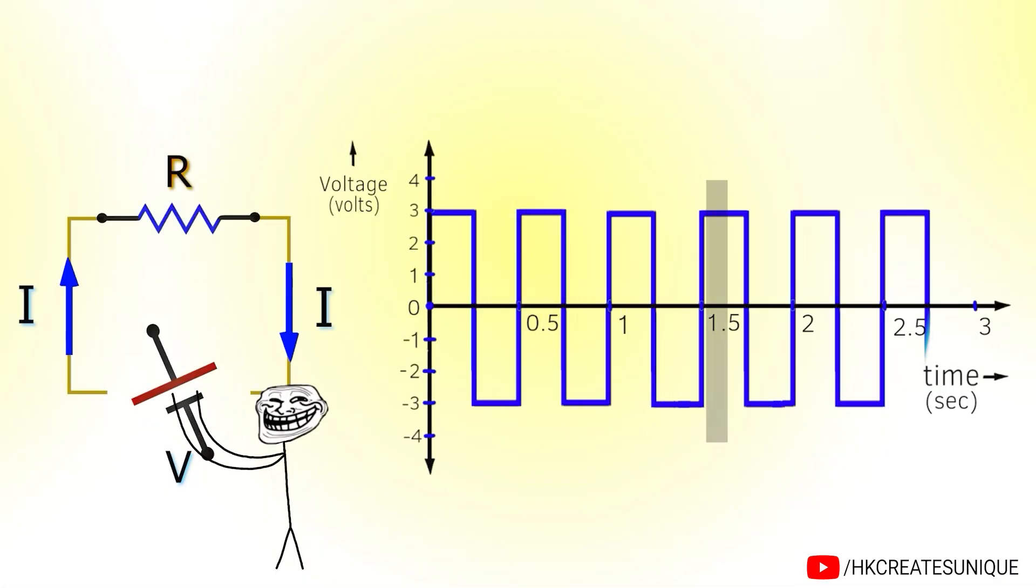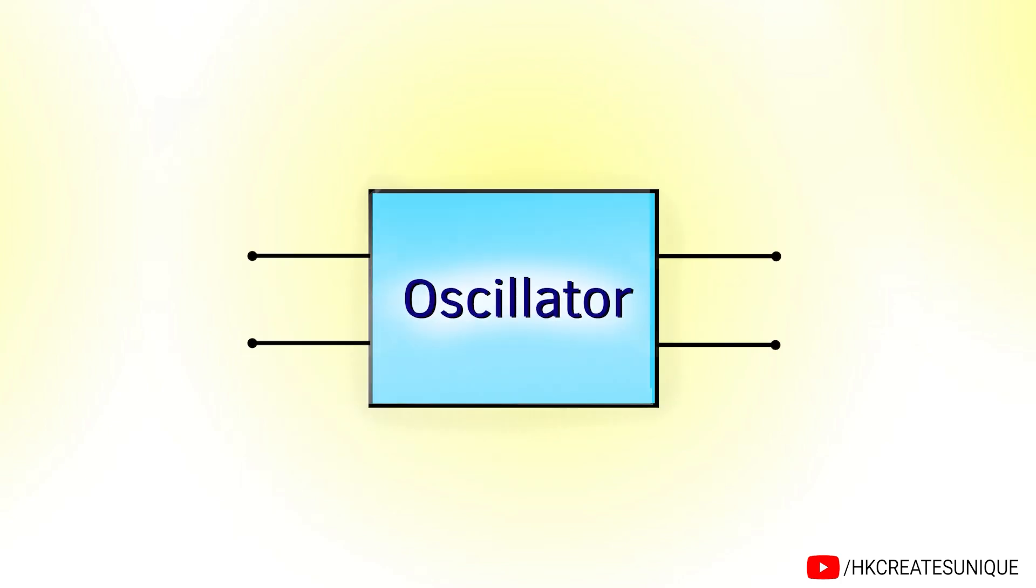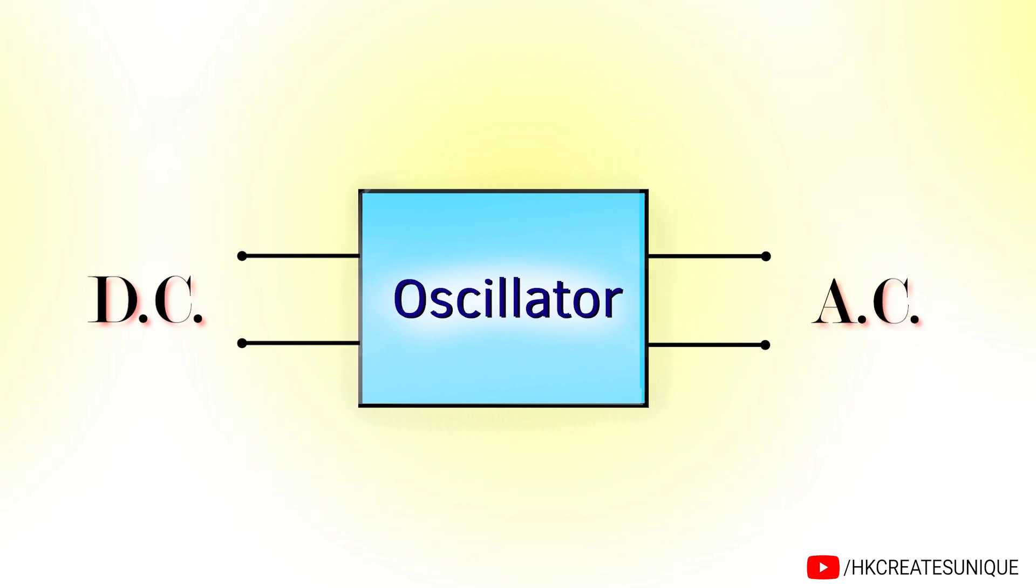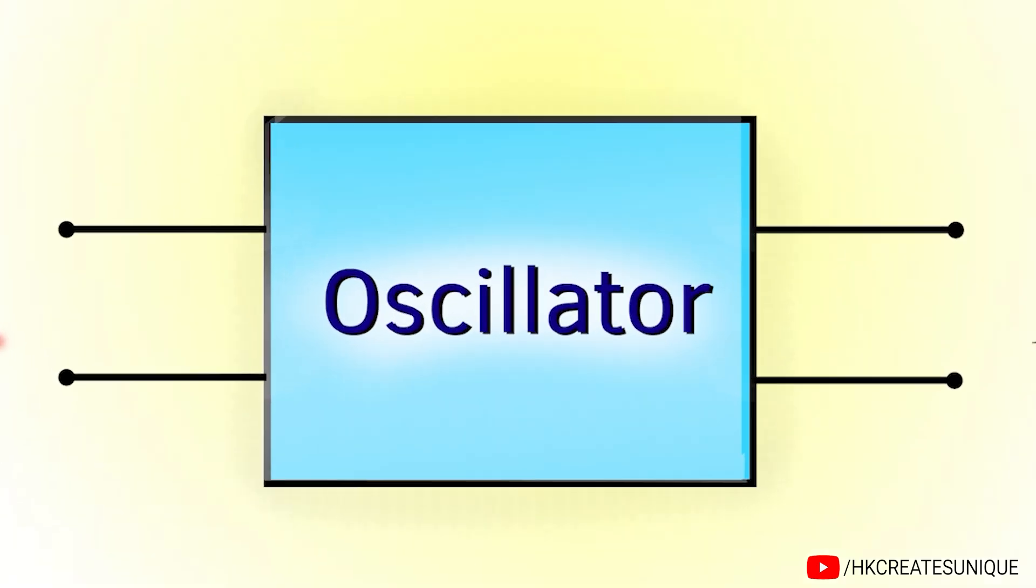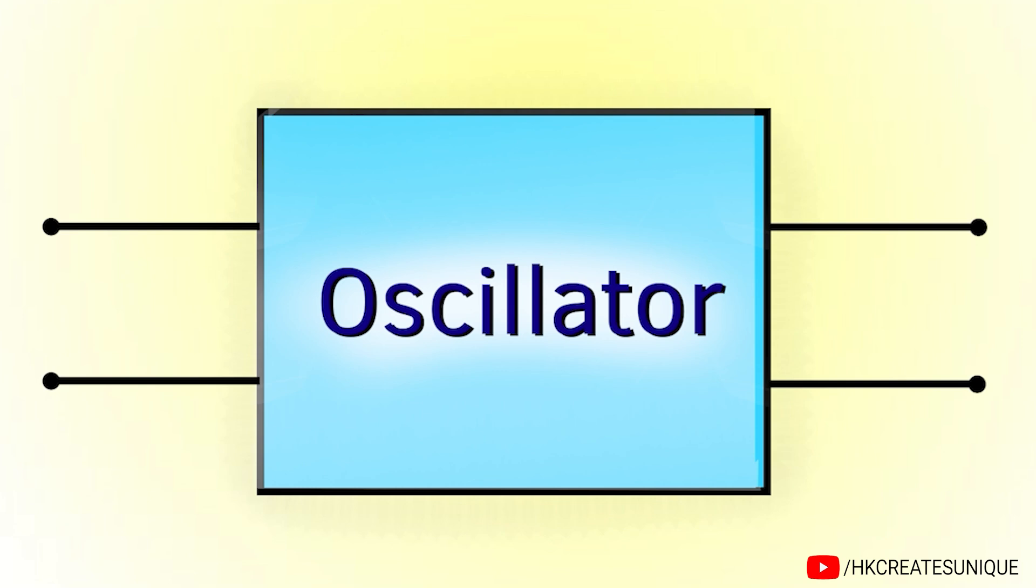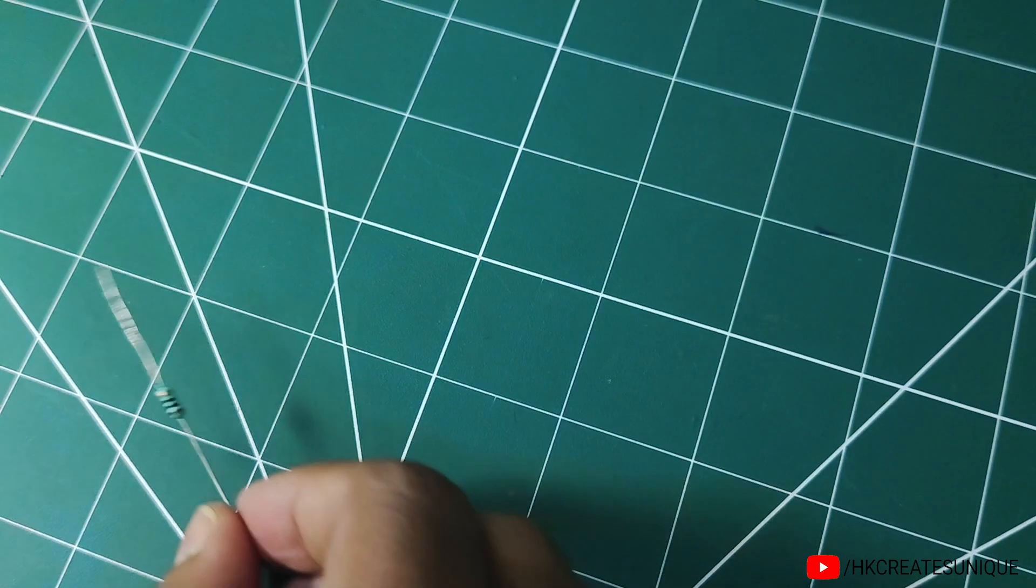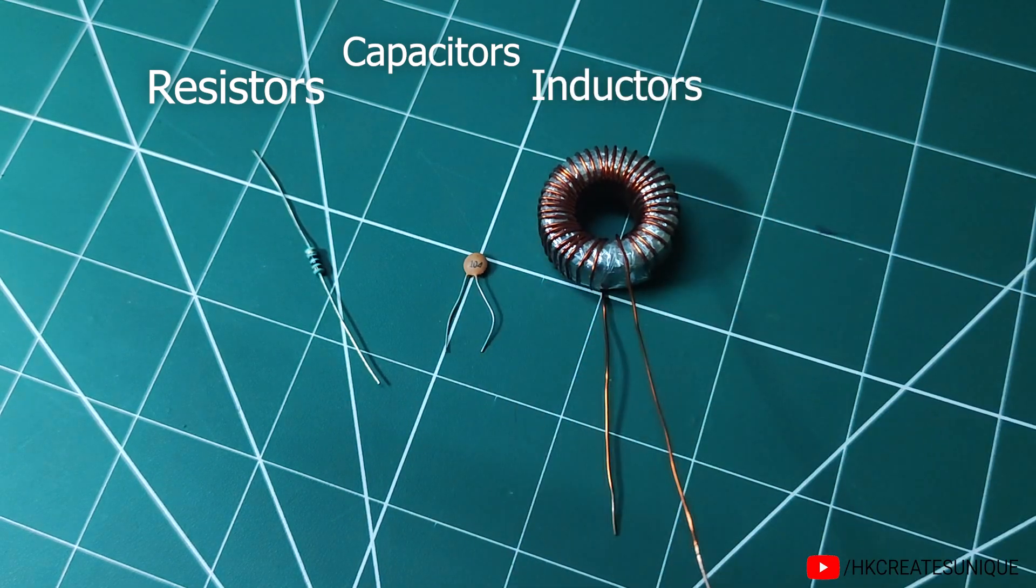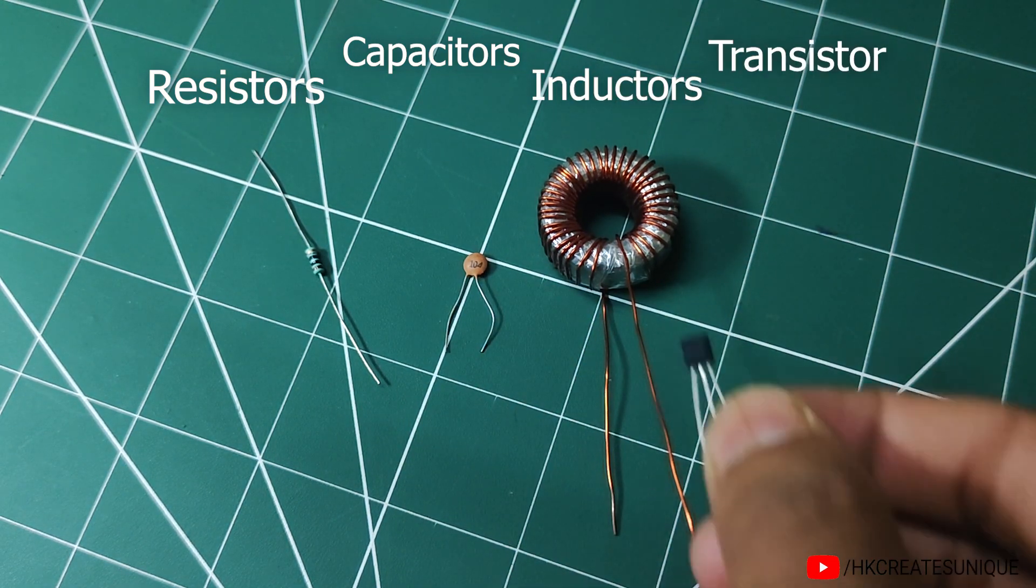It would be impractical to alternate polarity of the source to produce alternating current. So instead, oscillators are used to produce alternating current. It uses DC as input and produces AC as output. Simple oscillator circuits can be made by using basic electronic components such as resistors, capacitors, inductors, and active components such as transistors.